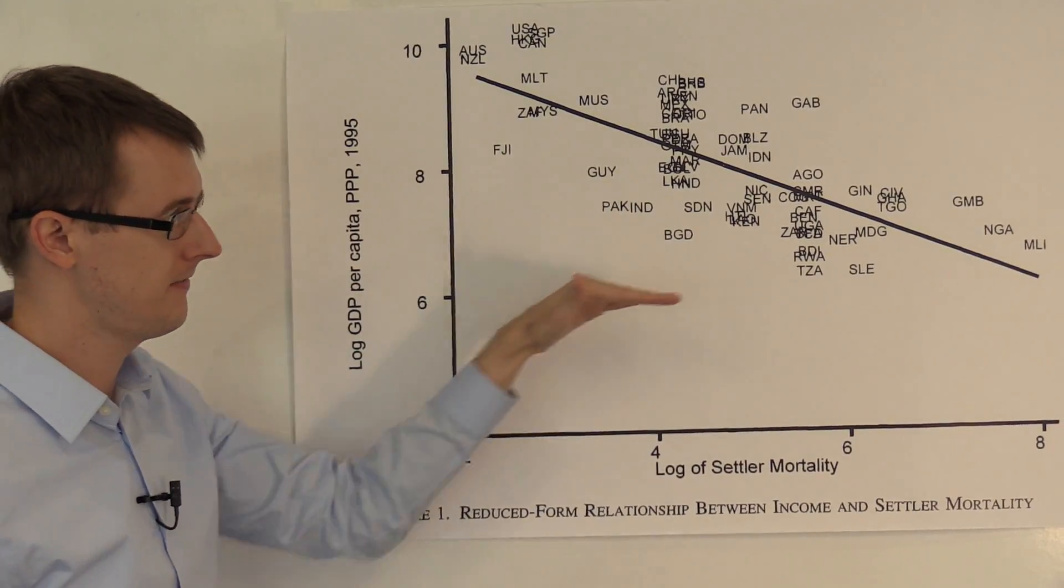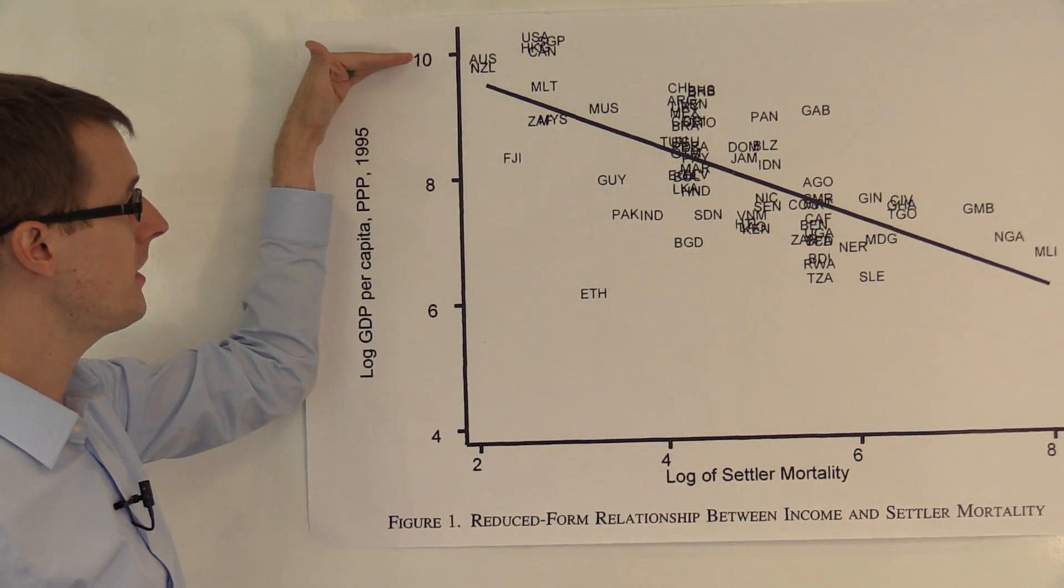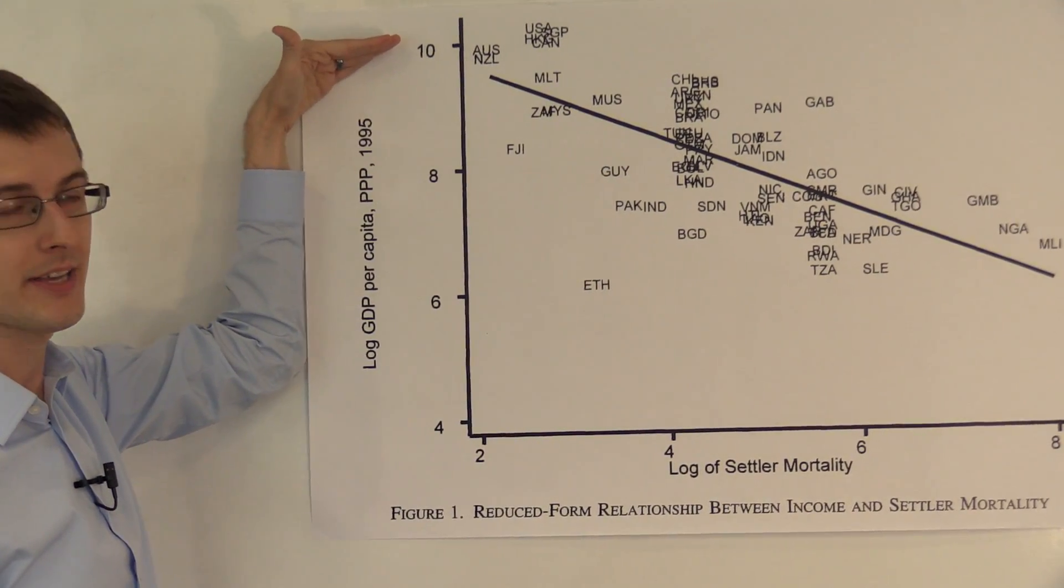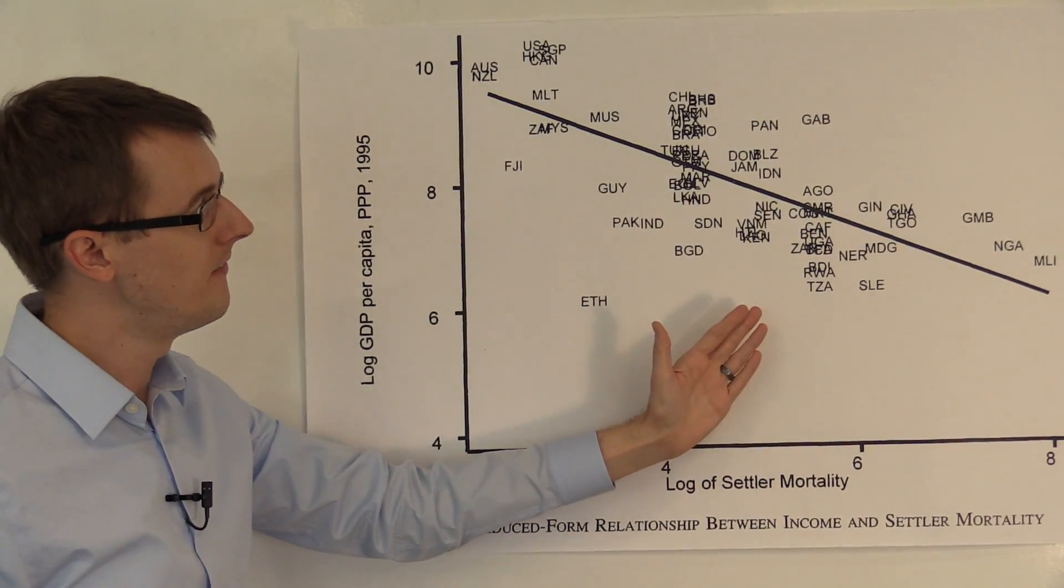So countries down here, like Mali, have lower GDP per capita in 1995. Countries up here have higher GDP per capita in 1995, like Australia and the US.